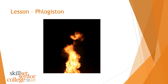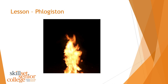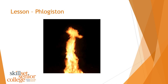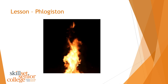Phlogiston was believed to be a substance found in materials that burned. When a material burned, it was this substance called phlogiston that was burning, and when a material had used all its phlogiston up, it would stop burning and the fire would go out. Phlogiston was a theory held for a number of years, and it was quite difficult to convince people otherwise. It's also related to the conservation of mass, as you'll see.